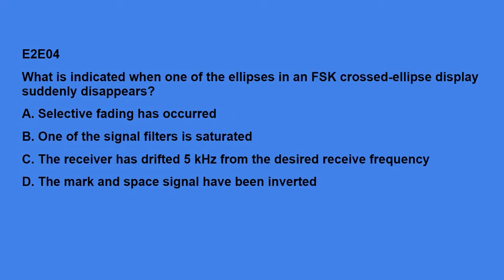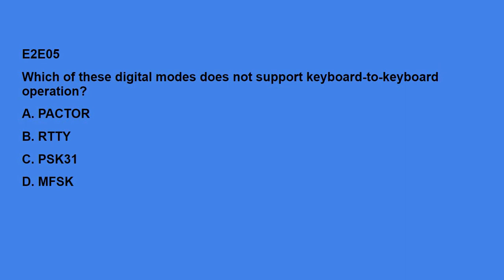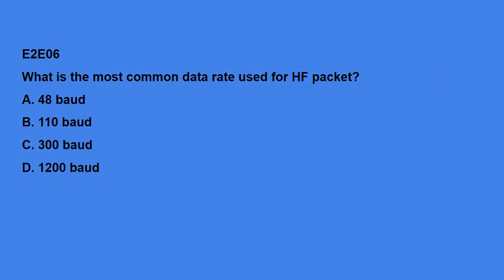E2E04: What is indicated when one of the ellipses of an FSK cross-eclipse display suddenly disappears? Selective fading has occurred. E2E05: Which of these digital modes does not support keyboard-to-keyboard operation? Pactor. E2E06: What is the most common data rate used for HF packet? 300 baud.